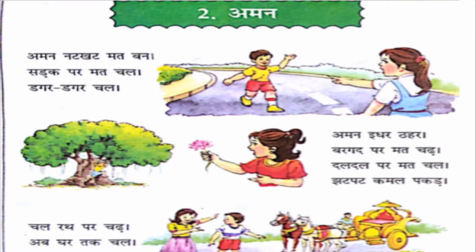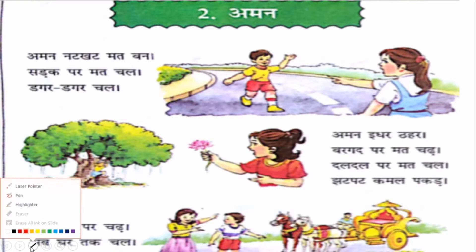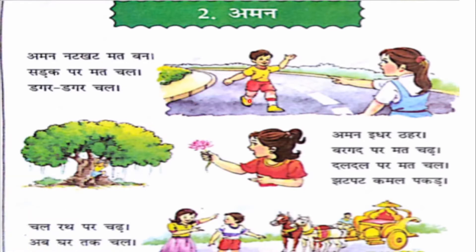So children, let's start today's part, Aman. You can see here, children — here is a boy whose name is Aman. His name is Aman. And here is a girl, and she is Aman's sister. Let's start reading.